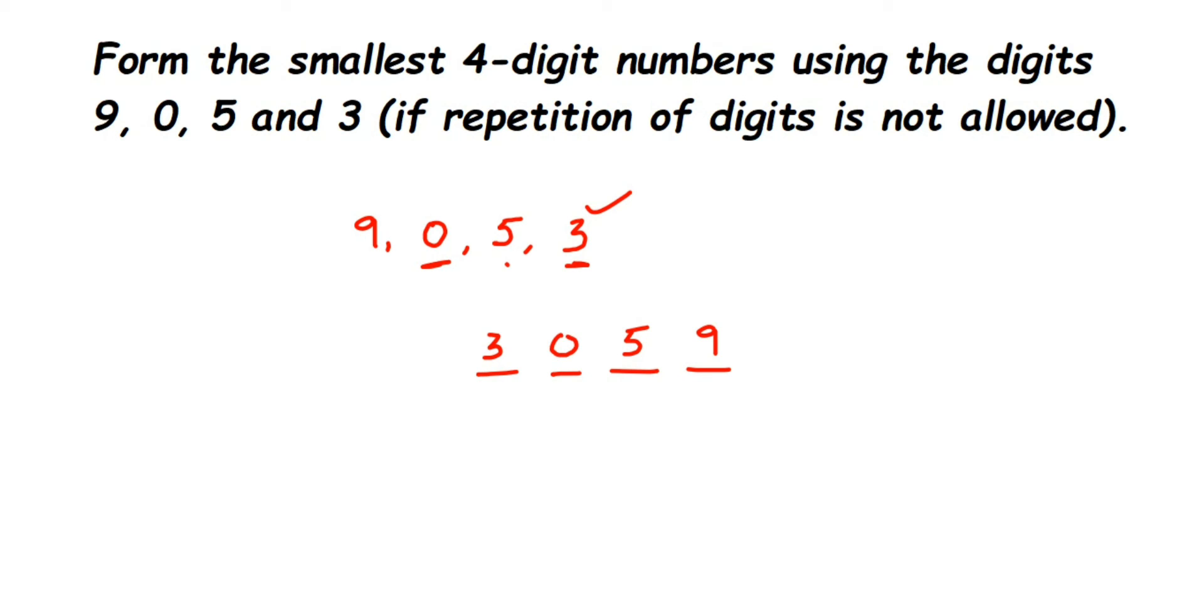In case you don't have any zeros in the question, then you can just write down the numbers in ascending order—that will be the smallest number. The same goes for the greatest number also.